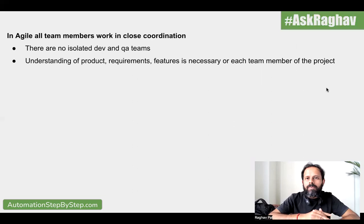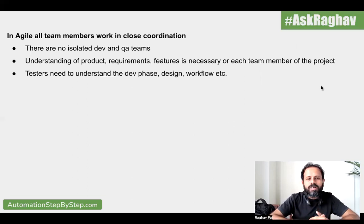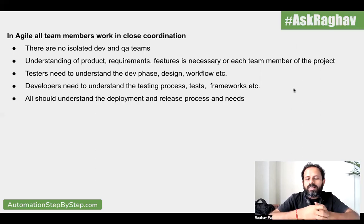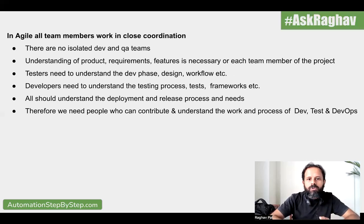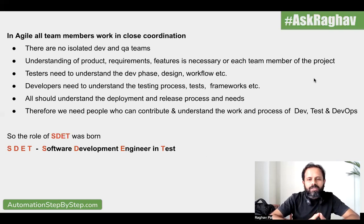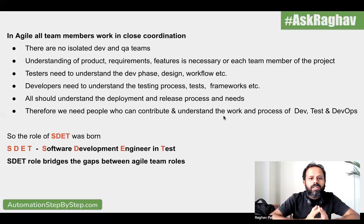There are no isolated dev and QA teams — it is a single scrum team. Every team member understands the products, the requirements, and the features, and has visibility on what others are doing. Testers need to understand the dev phase, design phase, and workflow. Developers need to understand the testing process, testing tools, and automation frameworks. All team members should understand the deployment and release process and tools. Therefore, in Agile teams, we need people who can contribute and understand the work across dev, testing, QA, and DevOps. And with this need, the role of SDET — Software Development Engineer in Test — was born, bridging the gaps between agile team roles.